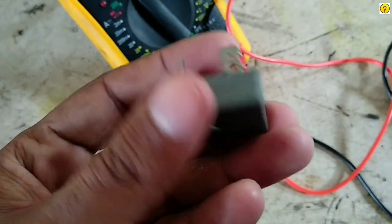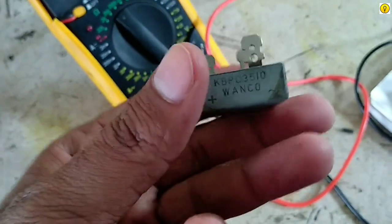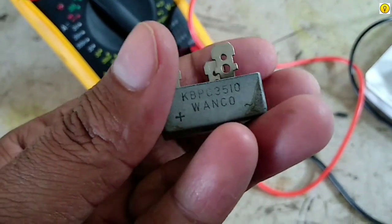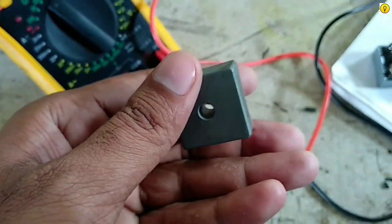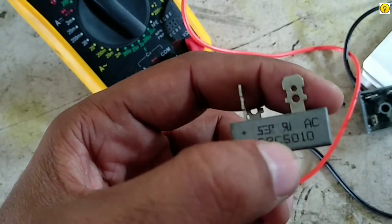Okay, so there is another bridge type rectifier. The rating of this rectifier is 35 ampere and this diode is 50 ampere.